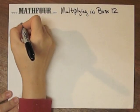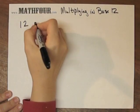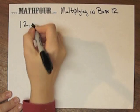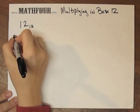This is multiplying in base 12, and we're going to multiply 12 base 12 times E base 12.